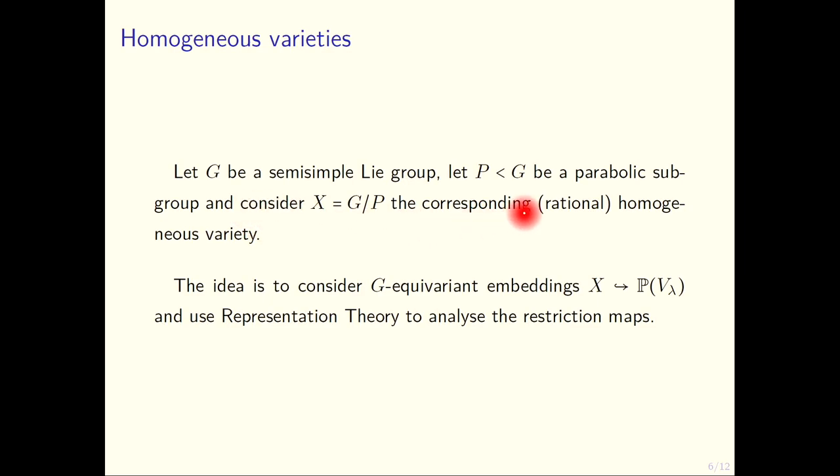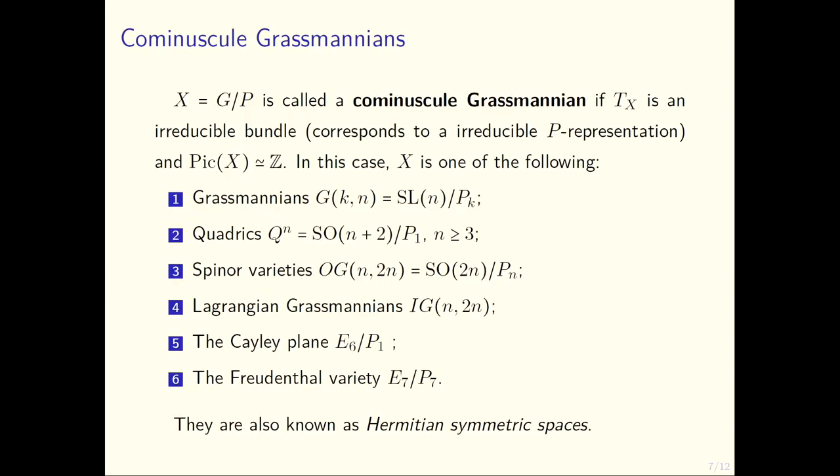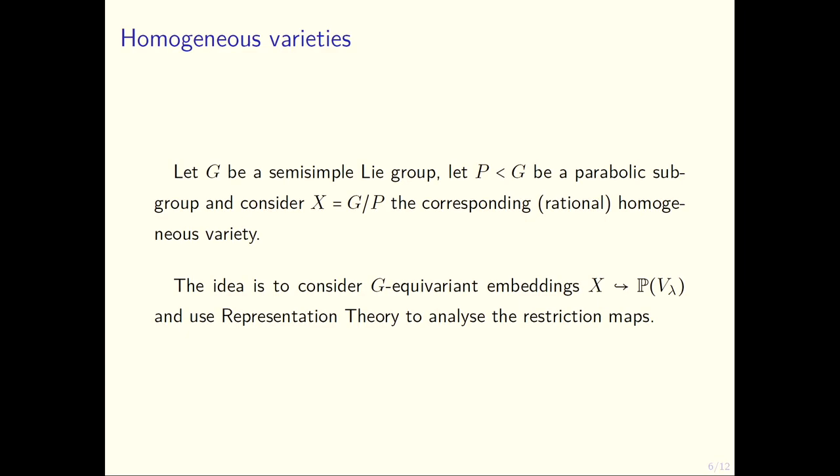I'll define what is a homogeneous variety. I'll take some G semi-simple group, that for us today would be simple actually, and take some parabolic. The quotient G/P, being parabolic means that this guy is projective and it's a rational homogeneous variety. The idea is to consider a G-equivariant embedding and use the action to compute things.